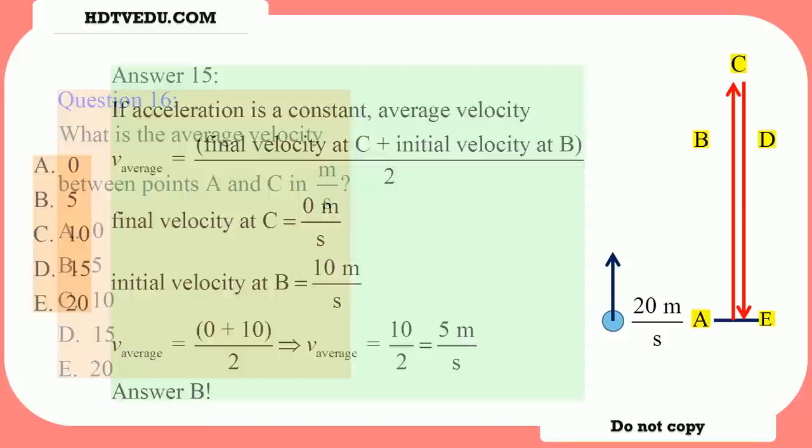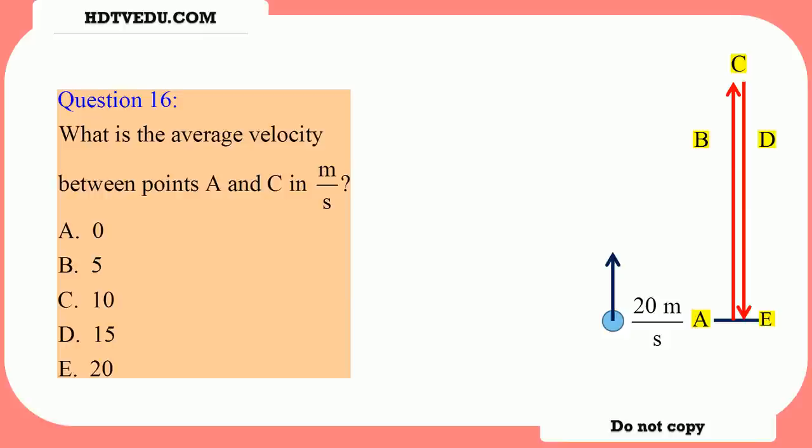Question number 16 — let's assume this is homework. What is the average velocity between points A and C in meters per second? And question number 17 is also homework: what is the average velocity between points A and D in meters per second?